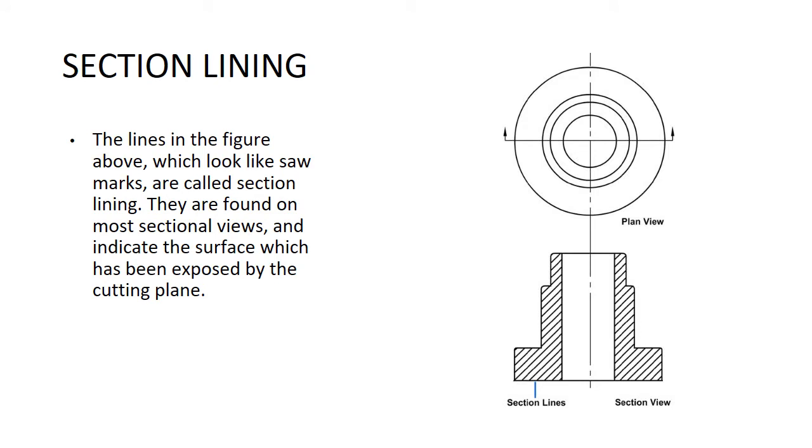Section lining. The lines in the figure, which look like saw marks, are called section lining. They are found on most sectional views and indicate the surface which has been exposed by the cutting plane. We put section lines on anything that's been cut through. It's like a saw mark. We see those cutting plane lines, we know that this has been cut with a section line, and we can approach digesting it mentally in that fashion.